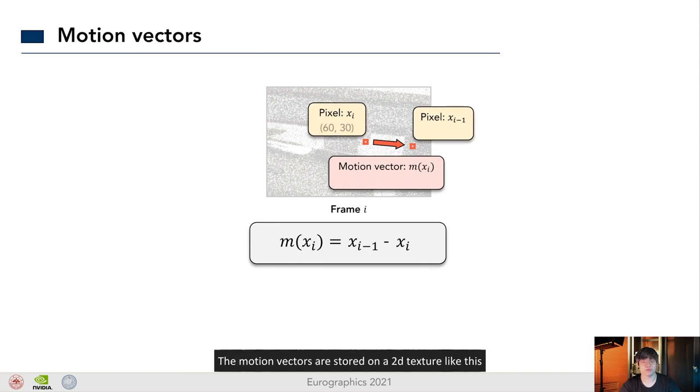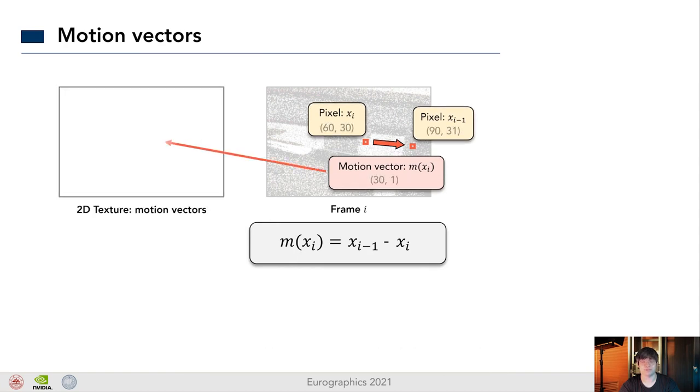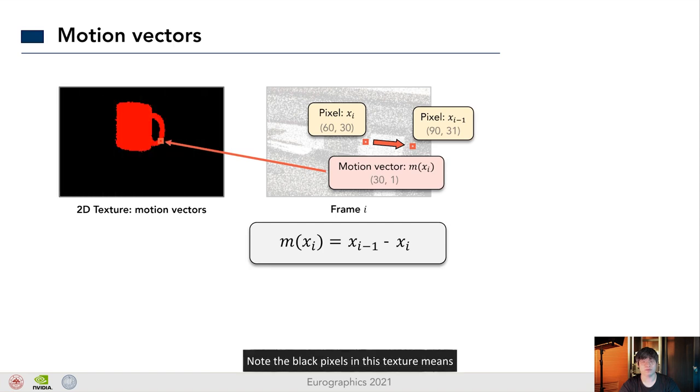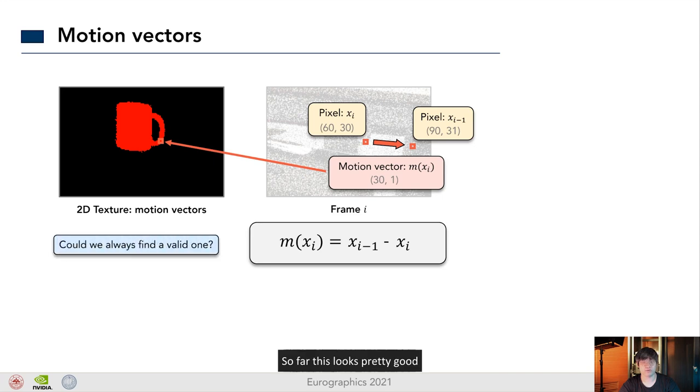The motion vectors are stored on a 2D texture like this. Note that the black pixels in the texture means their motion vectors are out of bounds, since the geometries within these pixels are outstanding. So far, this looks pretty good. However, could it always find the right temporal correspondence for us? The answer is no. The motion vectors may be wrong in certain cases.